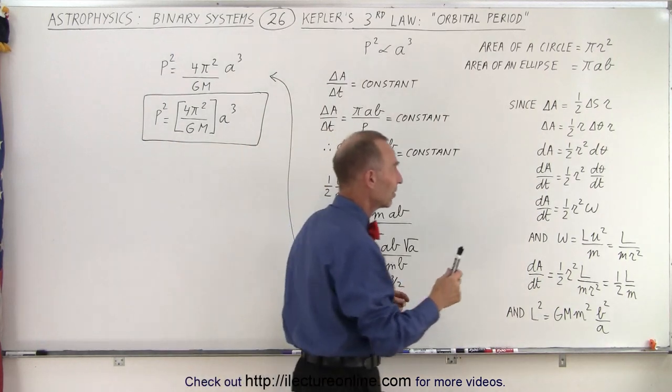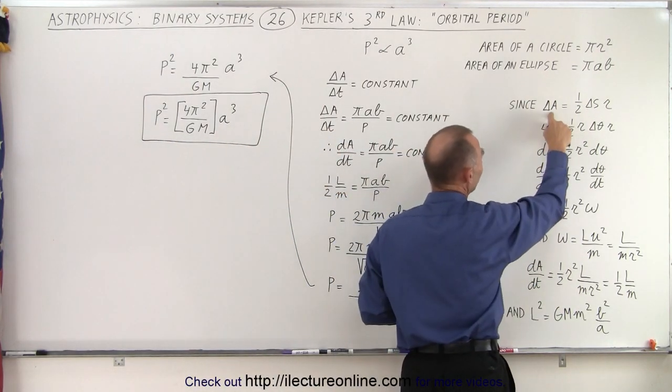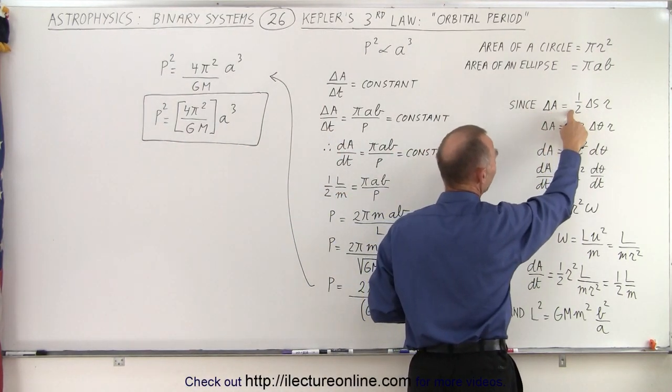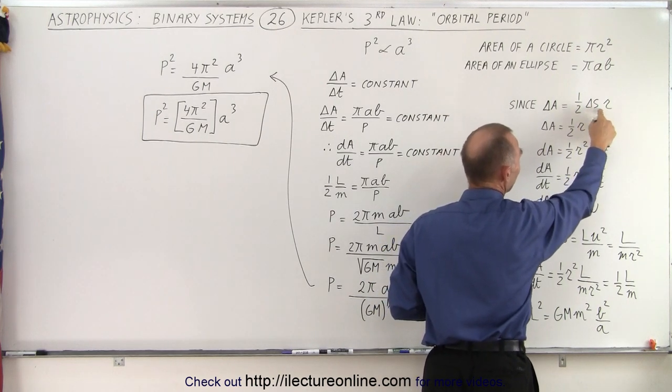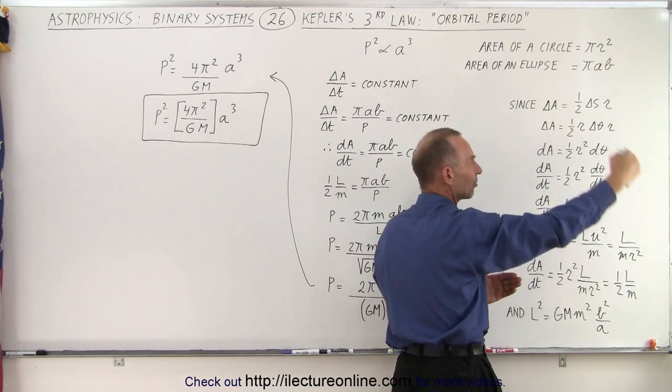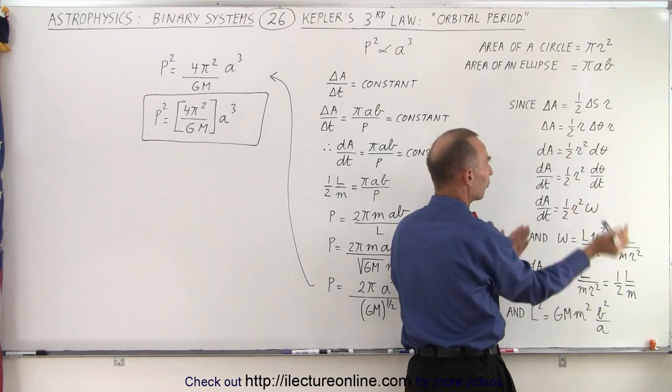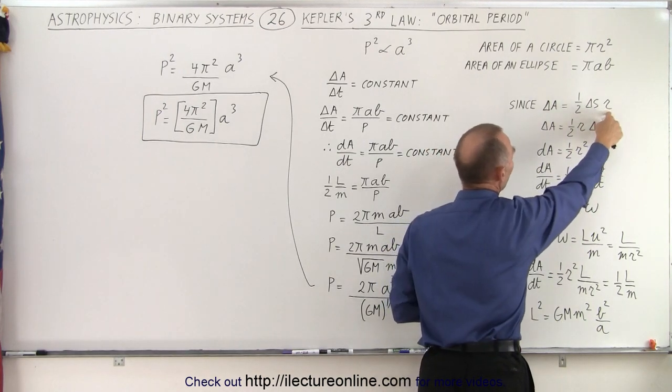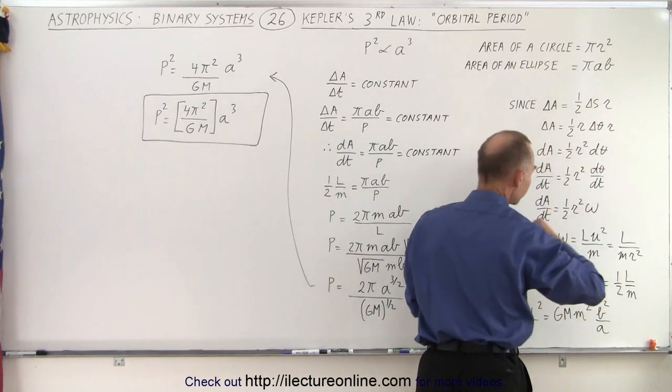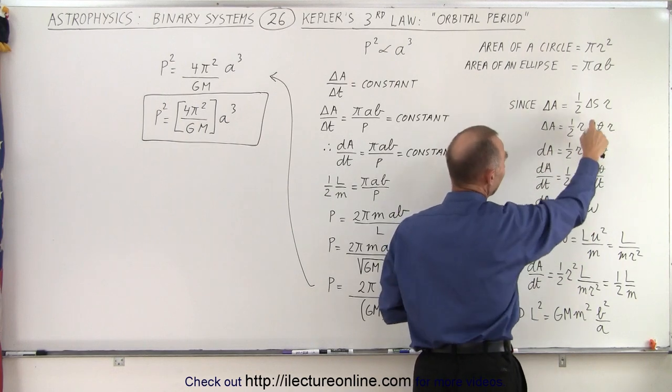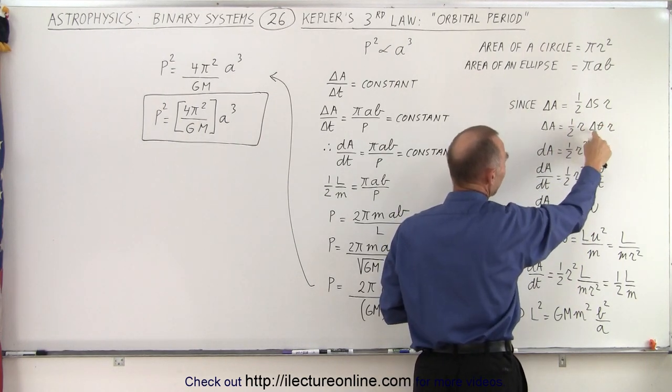So then when we move over here, we've seen this before, that if the amount of area swept out is equal to half the area of the base times the height, the area of the base would be the delta s along the base of the triangle formed by that motion, times r which is the distance from the sun to the planet, and then of course delta s is r times delta theta.